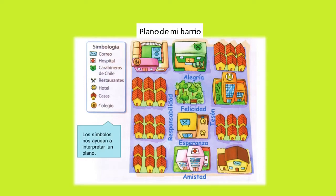Luego dice hotel, con la letra inicial de color amarillo; luego una casa, que representa las casas; y luego el símbolo de un colegio, en donde aparece un adulto y un niño tomado de la mano. Cada una de estas palabras tiene un símbolo. Ahora quiero que en el plano busques el hospital. Fíjate cuál es la simbología del hospital y busca el hospital en el plano. Debes fijarte en la simbología y buscar esa misma simbología en el plano.